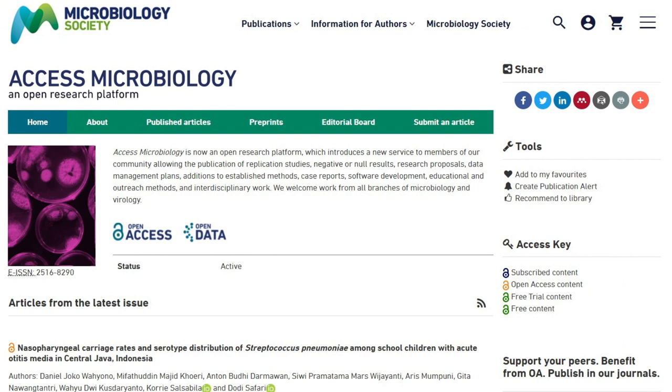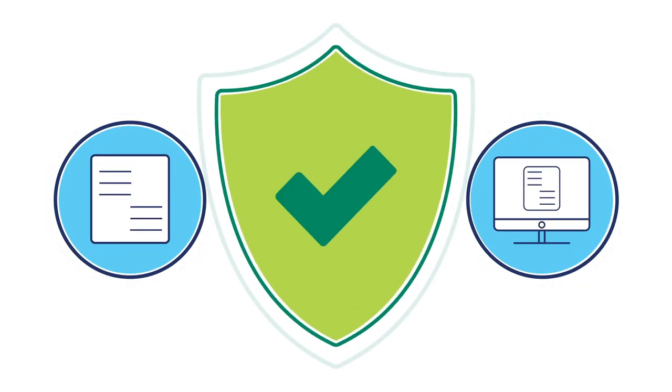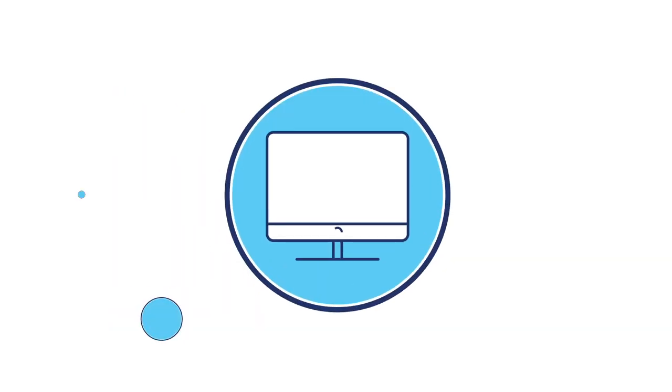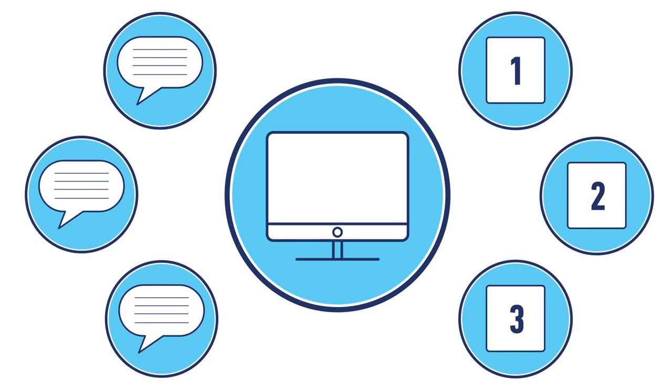On this platform, original research is posted as a pre-print which undergoes full transparent peer review. Our open research platform safeguards the scientific record, ensuring that the review process is robust, transparent, and fair. On the platform, all peer review materials and previous versions of an article are publicly available, making sure that nothing is missing from the story.